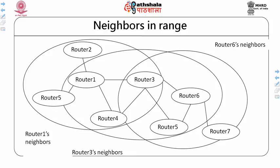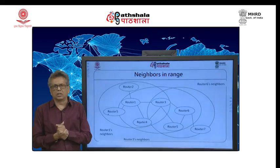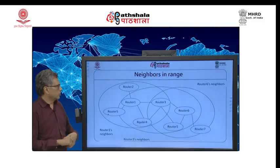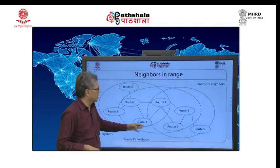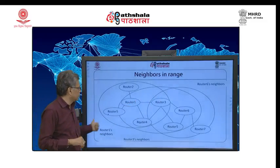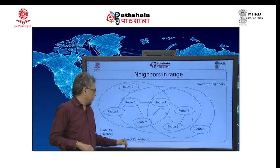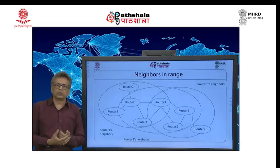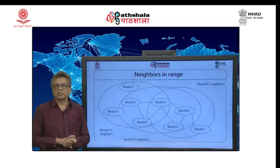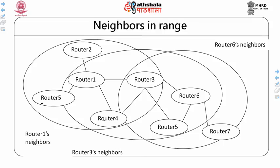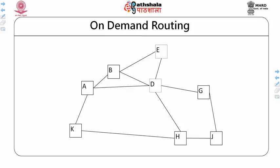Router 1's range is represented by a circle, so all routers within that circle are directly addressable. But if router 1 has to send something to router 6, it cannot do it directly — it will have to use some other router as an intermediary. Every node is a router in MANets. Here three different regions are displayed: router 1's neighbors who can listen to router 1's broadcast, router 3's broadcast region, and router 6's broadcast region. These links are not physical links — they are all wireless links.